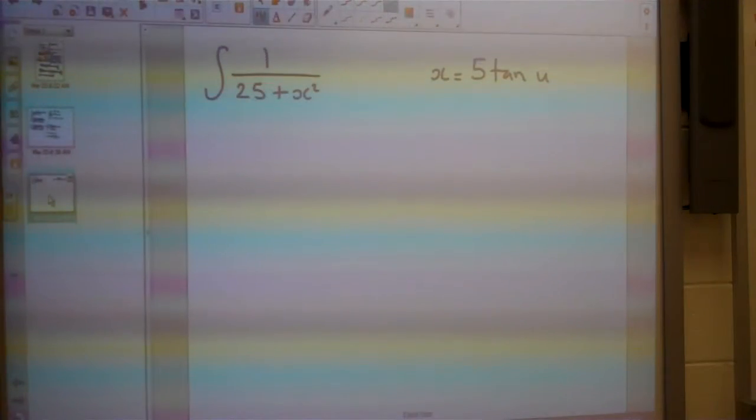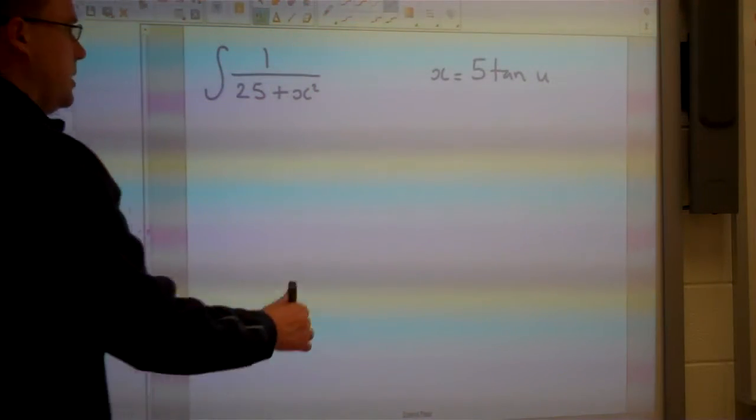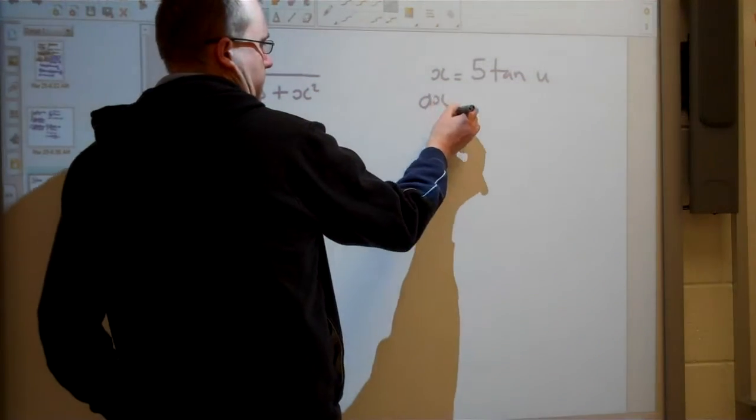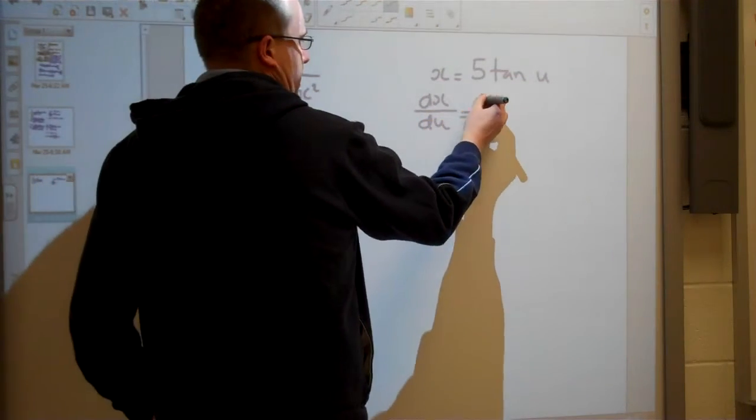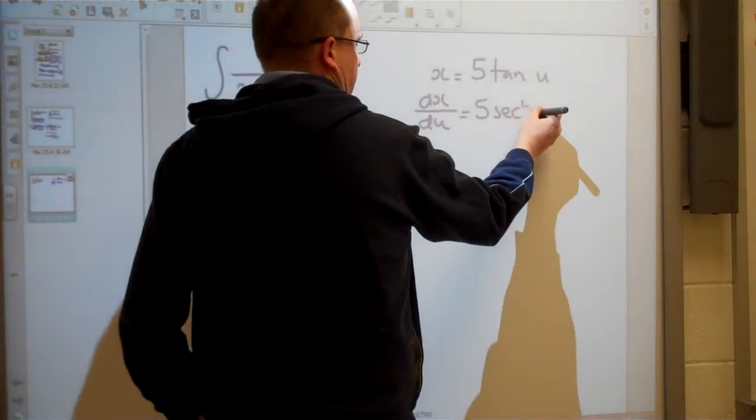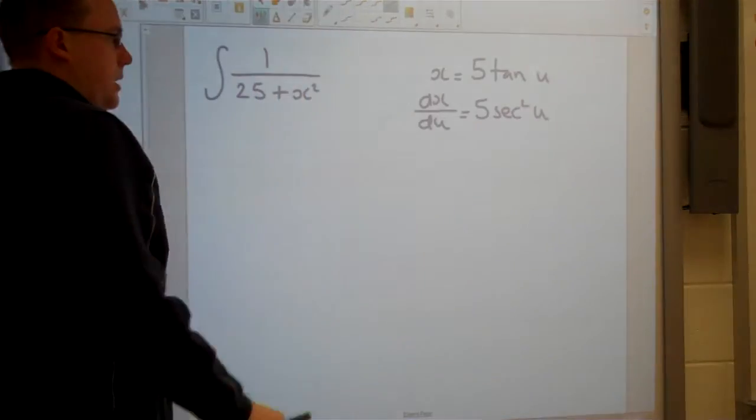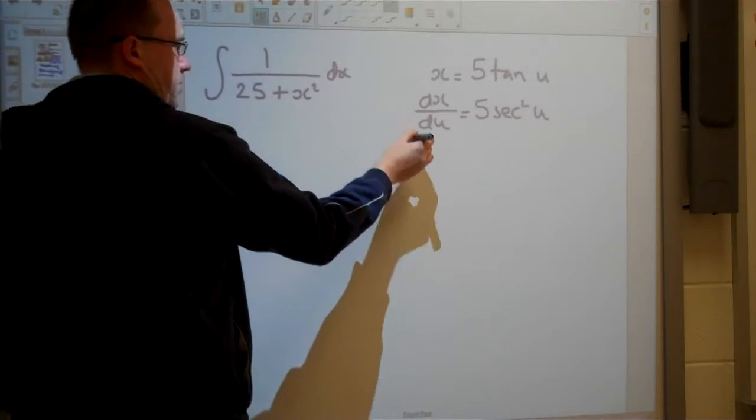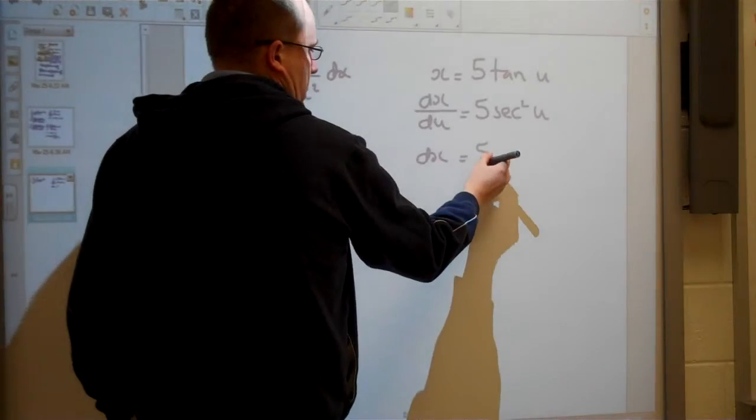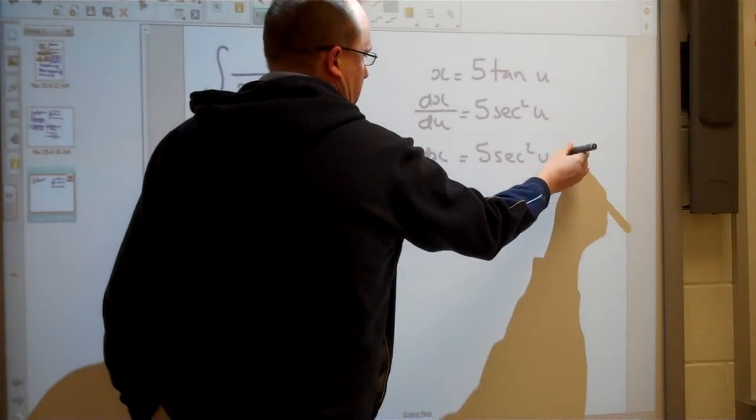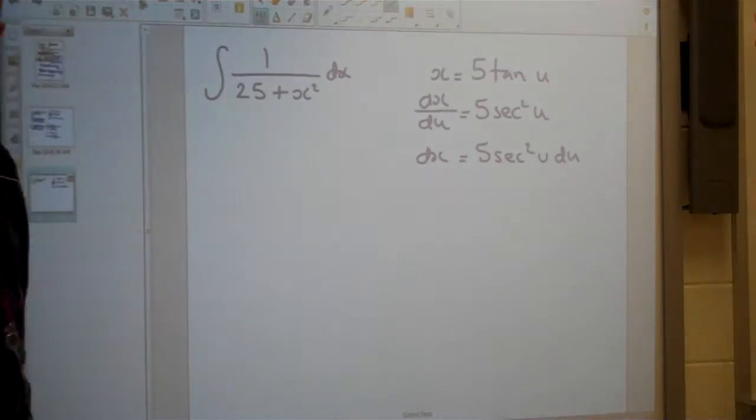Now they should give you that in the question at this stage, but I think it's one that you should also be aware of, just in case you have to solve it without. So we're going to differentiate, so the differential of tan is secant squared, and then if I solve for dx, then secant squared u, du.